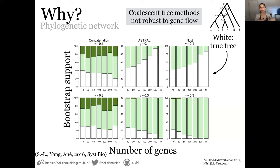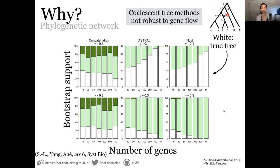We didn't know the data came from a network, and we used three methods to estimate a tree. What we would love for a tree method is that it returns the underlying tree structure — the tree without the gene flow arrow — that has the main vertical signal of the data. That's what we would want, but it turns out that doesn't happen every time.